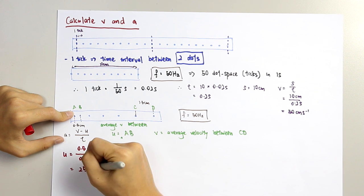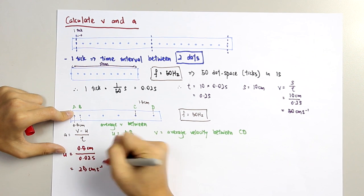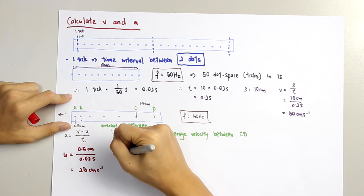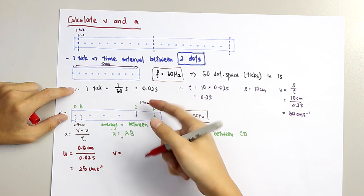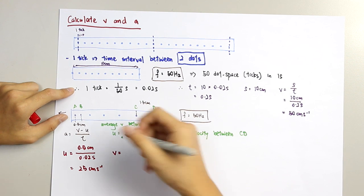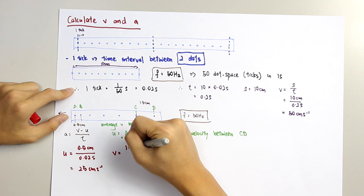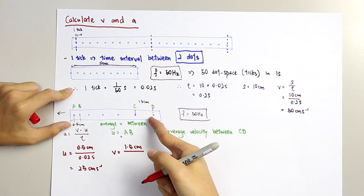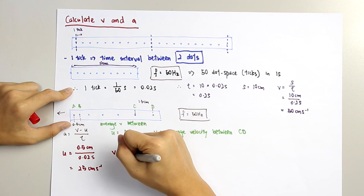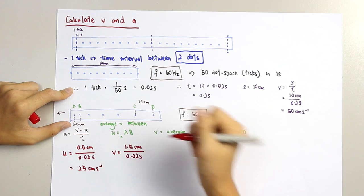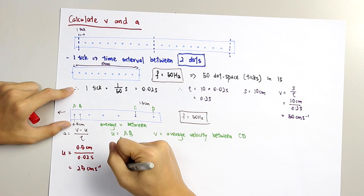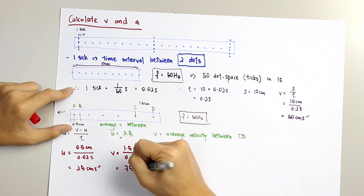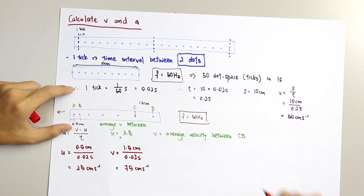The same goes for final velocity. The displacement between C and D is 1.5 cm, and the time taken for one tick is 0.02 seconds. Calculating this gives a final velocity of 75 cm per second.